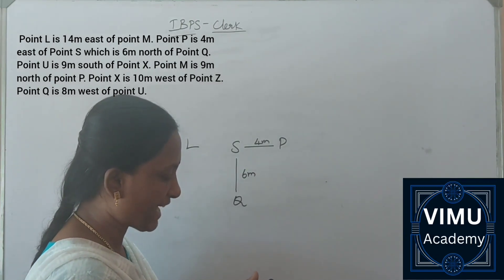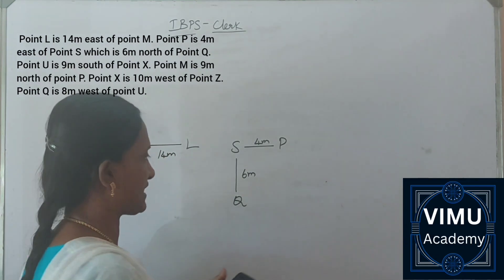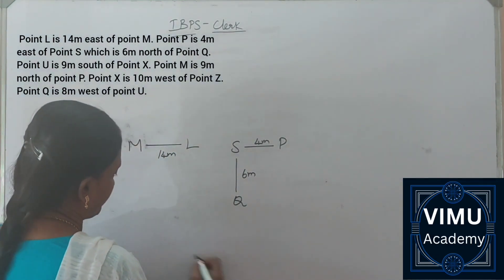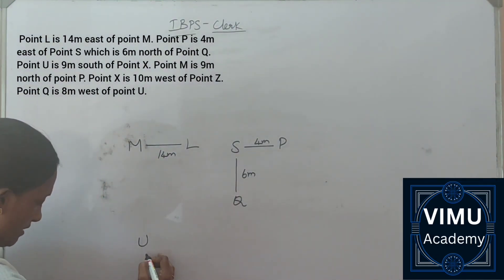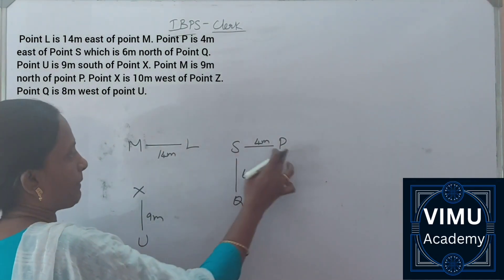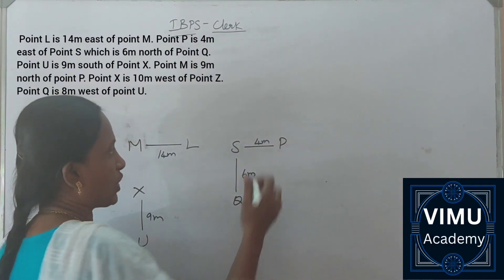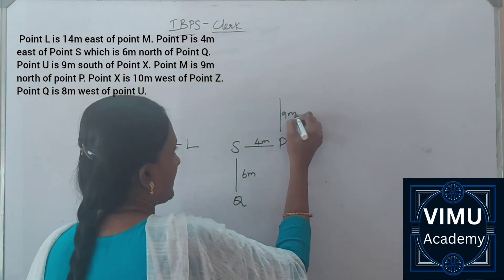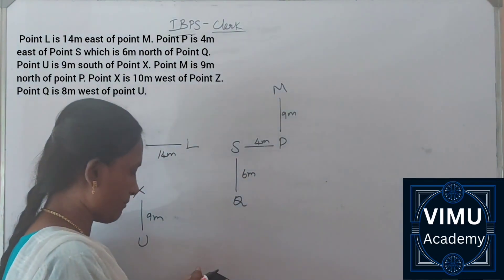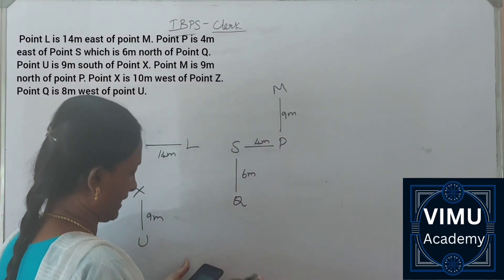Point U is 9 meters south of point X. Point M is 9 meters north of point P. Let me draw this diagram.